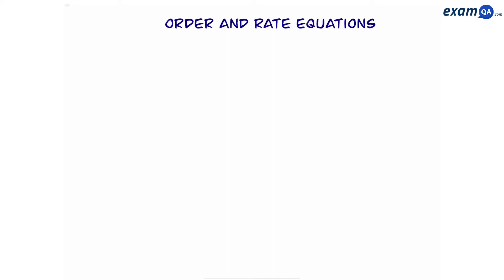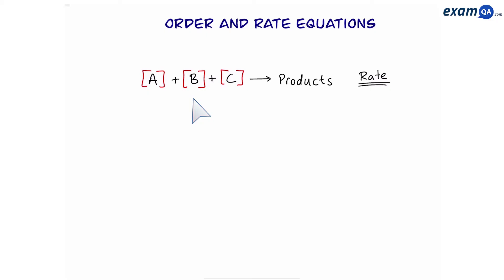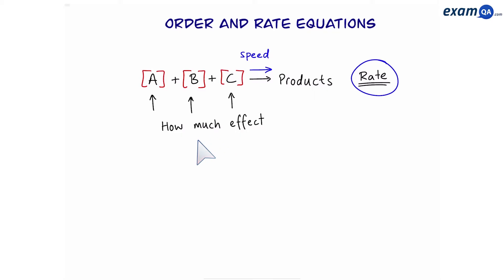Order and rate equations. Let's say we have this reaction: A plus B plus C gives us our products. This reaction has a certain rate or speed. If we change the concentration of those reactants, we know that this would affect the speed of the reaction, or in other words, the rate of reaction. However, we want to know how much does the concentration of each reactant affect the rate? Or in other words, what is the order of these reactants?